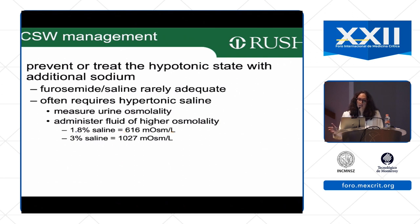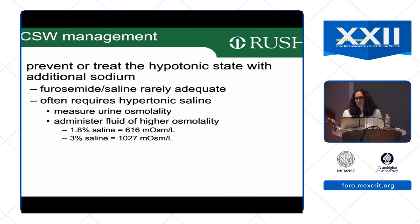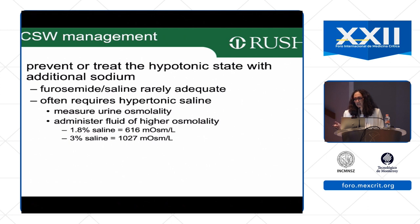Measure urine osmolality and administer fluid with higher osmolality than urine. 1.8% saline gives 616 mOsm/L; 3% saline gives 1027 mOsm/L — but requires a central line due to risk of extravasation and thrombophlebitis. 2% saline can be given peripherally but is less effective. Patients may remain in salt wasting for up to 21–22 days. In addition, we give salt tablets and fludrocortisone — salt provides more sodium; fludrocortisone helps retain salt and water.